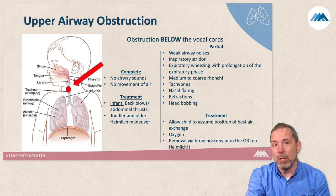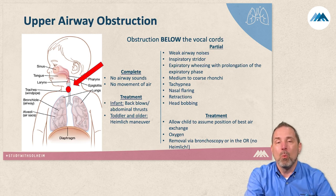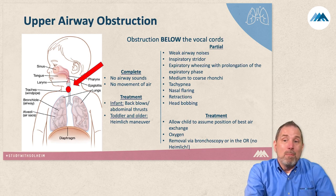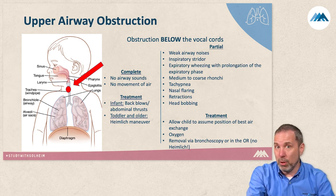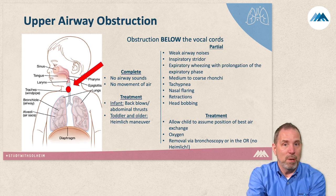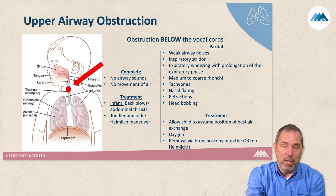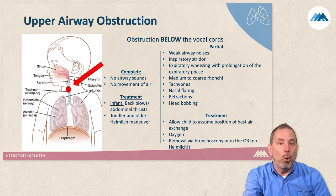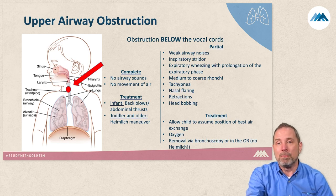If the obstruction is below the cords, a complete obstruction is managed the same way, but with a partial obstruction the patient can move air across the cords and make weak sounds or small amounts of communication. In real time this doesn't change management much — you'll still maximize their airway and try to calm them — but a test question could be written based on that difference, which is the only reason it's worth mentioning. I've seen exam questions specifically about that distinction.